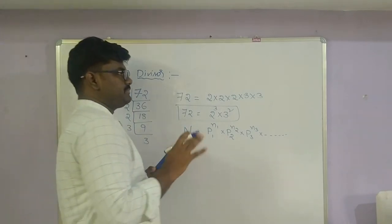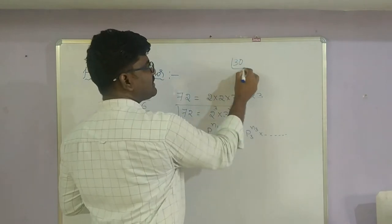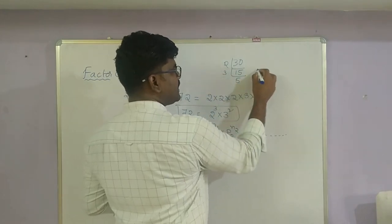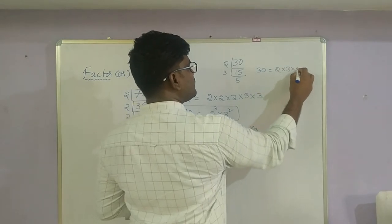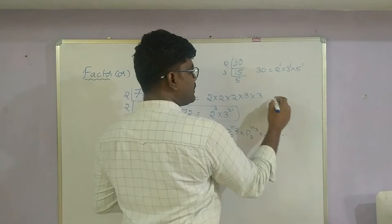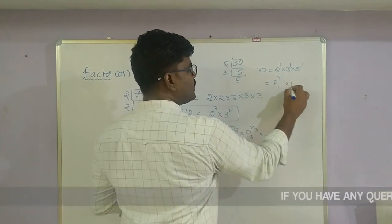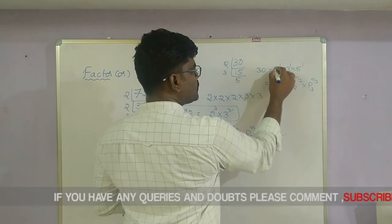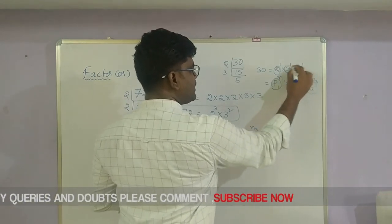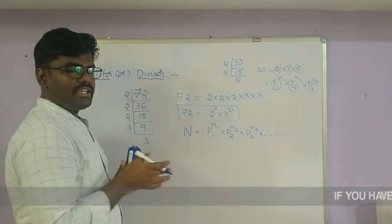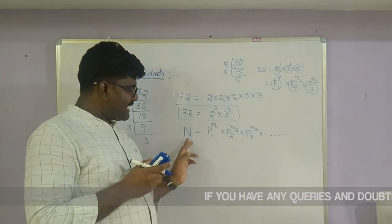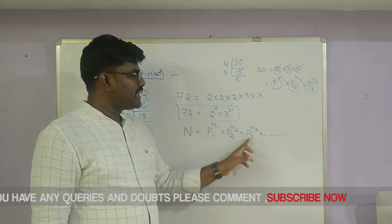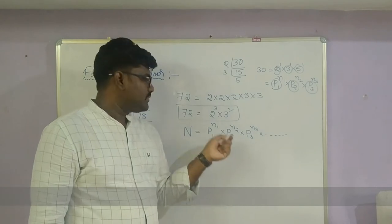For example, take 30. The prime factorization of 30: 30 ÷ 2 = 15, then 15 ÷ 3 = 5. So 30 can be written as 2 × 3 × 5, that is 2^1 × 3^1 × 5^1. This is in the form p1^n1 × p2^n2 × p3^n3, where p1=2, p2=3, p3=5. Any composite number can be written in this prime factorization form.